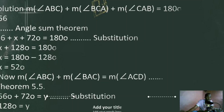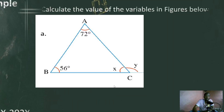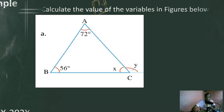If we get X as 52 degrees, it's simple to find the other angle. A straight angle is 180. To find the value of Y, you can use: angle Y equals the sum of angle ABC and angle BAC — meaning X plus 72 gives you angle Y. This is because Y is the remote exterior angle.